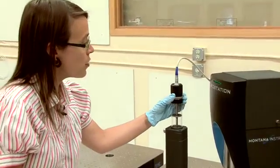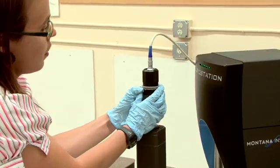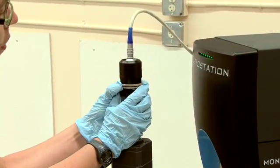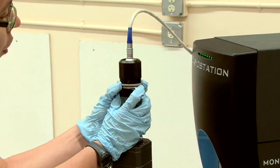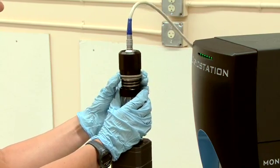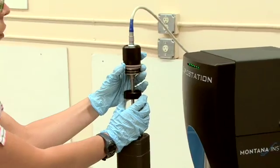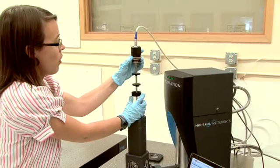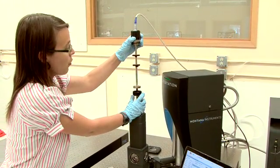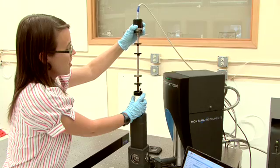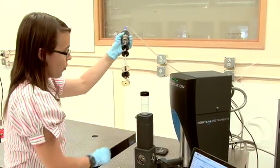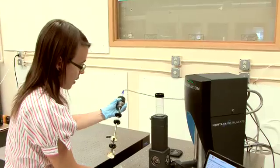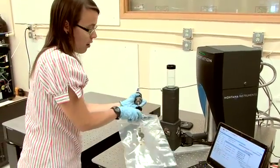To pull the sample rod out loosen the knurled nut and then take the sample rod from below the knurled nut and gently pull out. Slowly remove the rod to reduce the mixing of the air and the helium. Once the sample rod is out water will begin to condense on the rod. To keep the sample rod clean you can insert the sample rod into a bag.